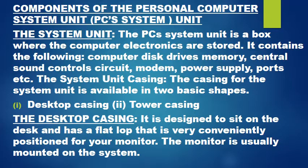The system unit casing is available in two basic shapes: 1. Desktop Casing and 2. Tower Casing. The desktop casing is designed to sit on the desk and has a flat top that is very conveniently positioned for your monitor. The monitor is usually mounted on the system.